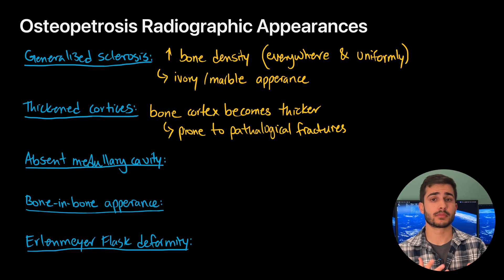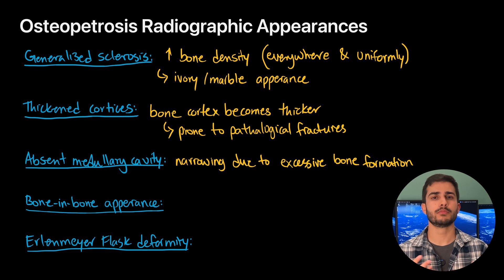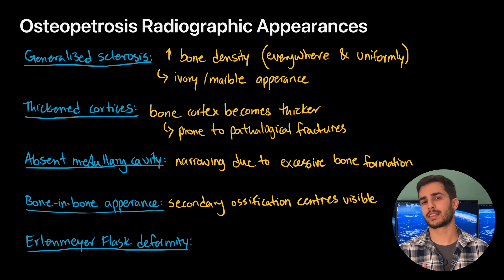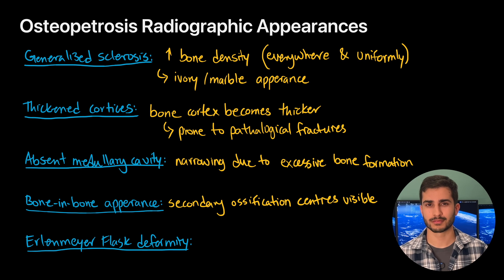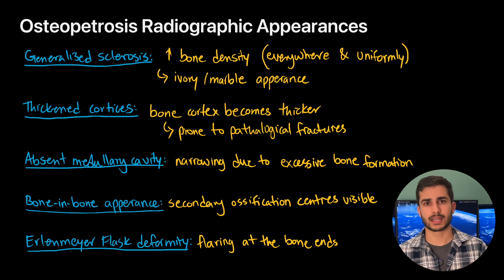Osteopetrosis can also present with an absent medullary cavity — the central part of the bone shaft containing bone marrow — which is often obliterated or significantly narrowed due to excessive bone formation. The bone-in-bone appearance is one of the hallmark signs, where secondary ossification centres are visible within the medullary cavity, making the bone look like it has another bone within itself, most commonly seen in the vertebrae and long bones. Finally, the Erlenmeyer flask deformity refers to flaring of the metaphysis of long bones, resembling an Erlenmeyer flask from chemistry class, resulting from a failure of normal bone modelling.